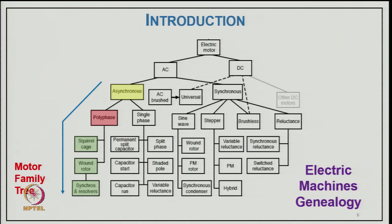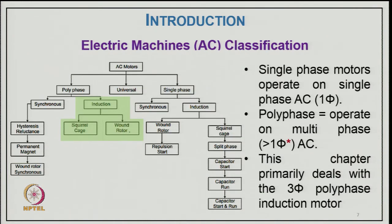In the classification of electric motors, under AC motors we have asynchronous and synchronous types. Asynchronous motors include polyphase induction motors — usually three-phase — which come in two kinds: squirrel cage and wound rotor. There are also single-phase motors. Single-phase motors operate on a single-phase AC source; polyphase motors operate on a multi-phase AC source. This chapter primarily deals with the three-phase polyphase induction motor.